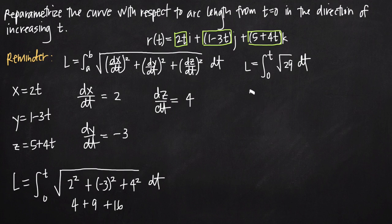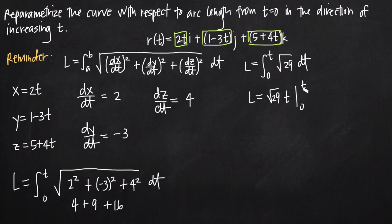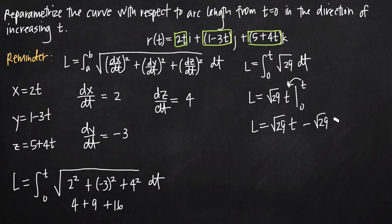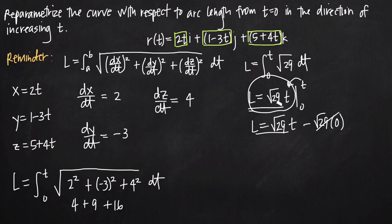The integral of the square root of 29 is just the square root of 29 times t, evaluated on the interval 0 to t. This is convenient because when we plug in the upper limit t we just get t, and subtracting the lower limit gives square root of 29 times 0, which goes away. So arc length equals square root of 29 times t. When your limits are 0 to t, you essentially already have your arc length function without needing to fully evaluate the limits.